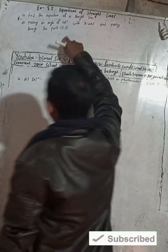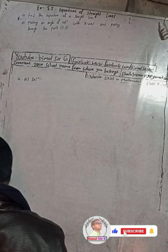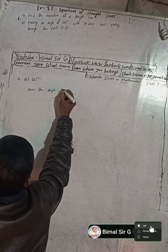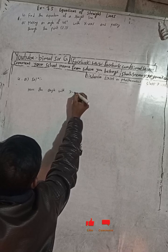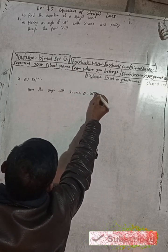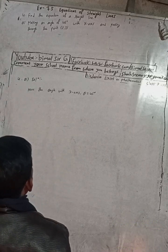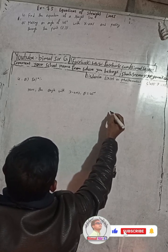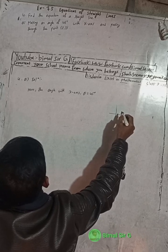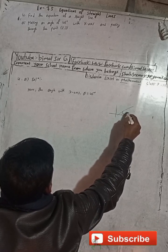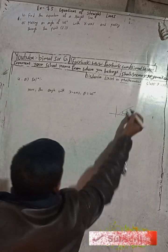Find the equation of a straight line making an angle of 45 degrees with the x-axis and passing through the point (2, 3). So the angle with the x-axis — that means theta. Suppose this is our x and y-axis; we have to find the equation of the straight line making an angle of 45 degrees with the x-axis and passing through the point (2, 3), which is somewhere here.